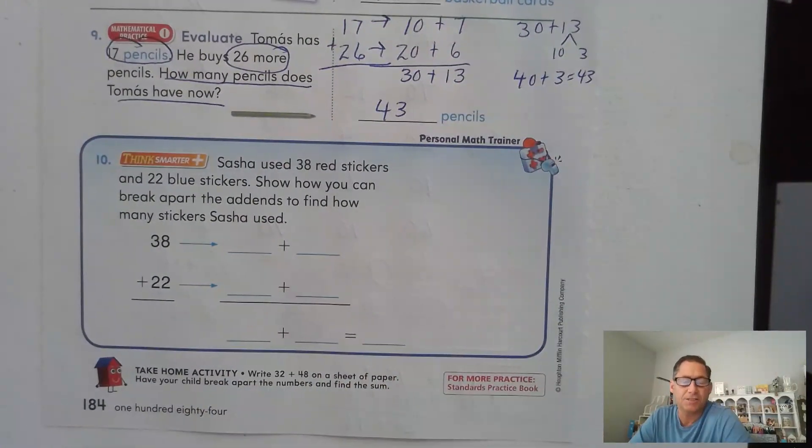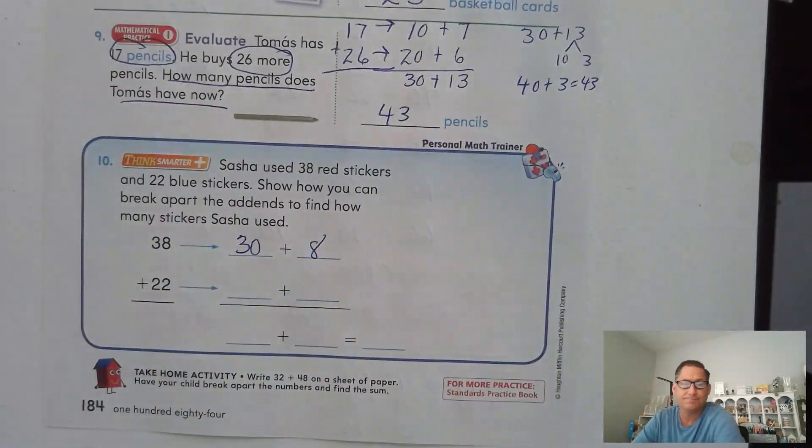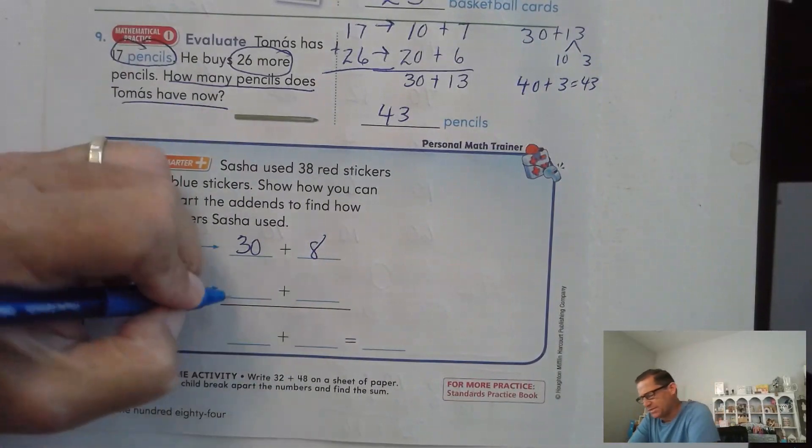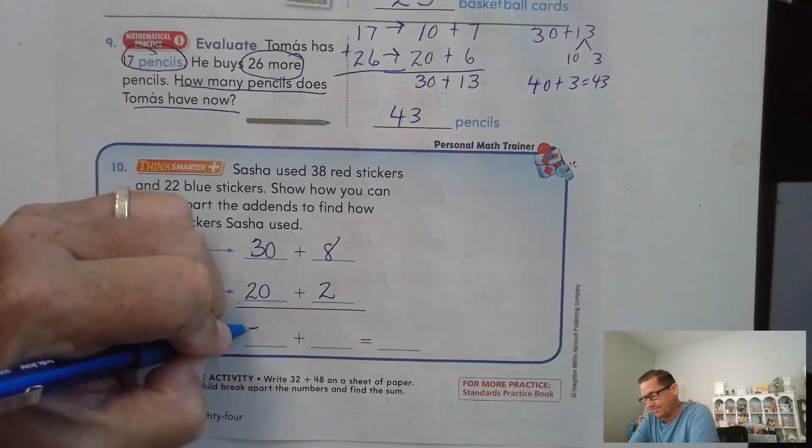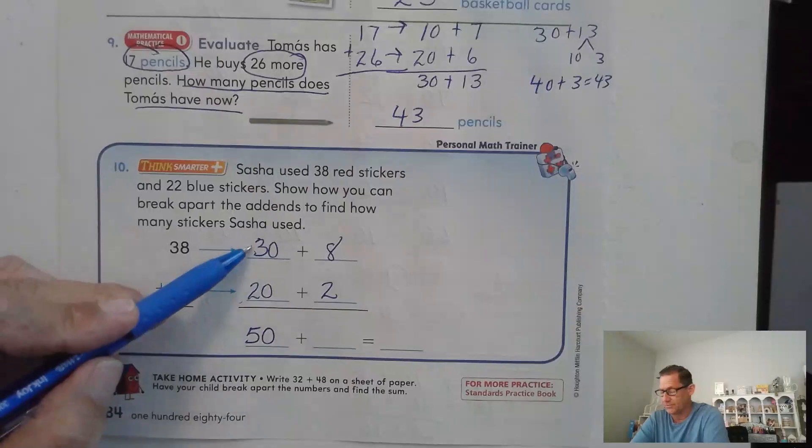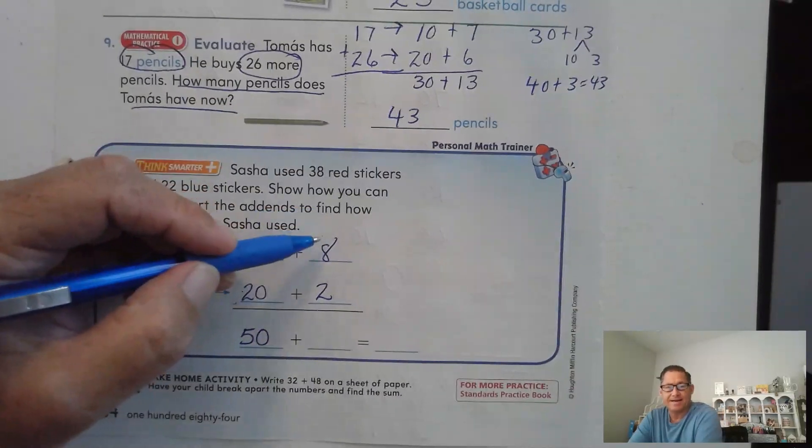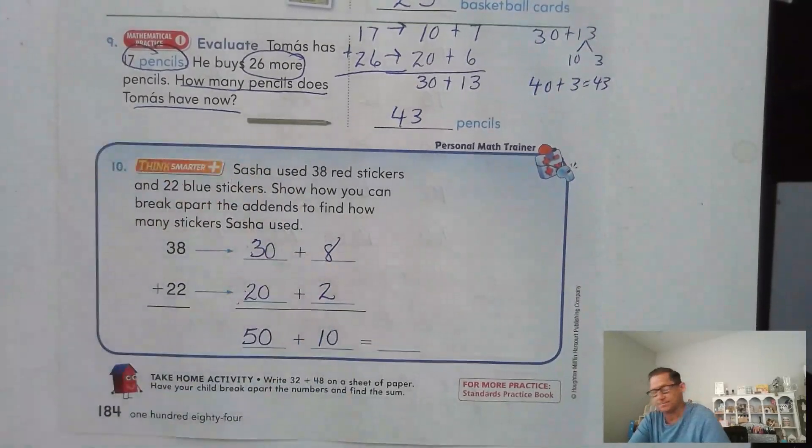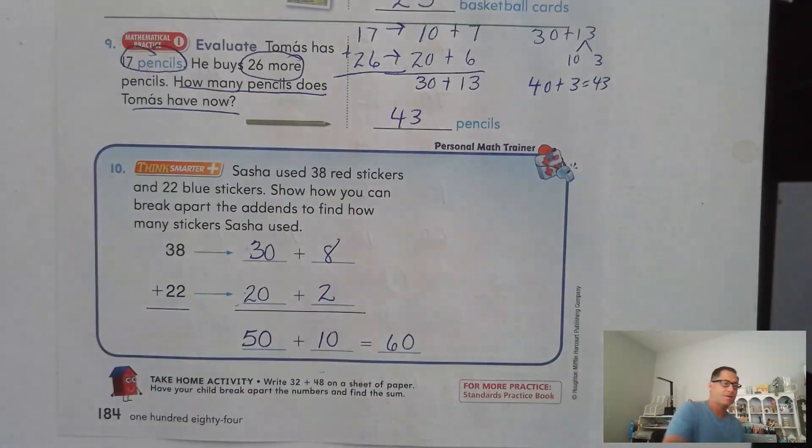And the last one for this lesson. Sasha used 38 red stickers and 22 blue stickers. Show how she can break apart the addends to find how many stickers Sasha used. So how do you break apart 38? 30 plus 8 and 22. 20 plus 2. 30 and 20 is 50. 3 tens plus 2 tens is 5 tens. And 5 tens is 50. And 8 ones plus 2 ones is 10 ones. Well, 50 plus 1 more ten. 60.